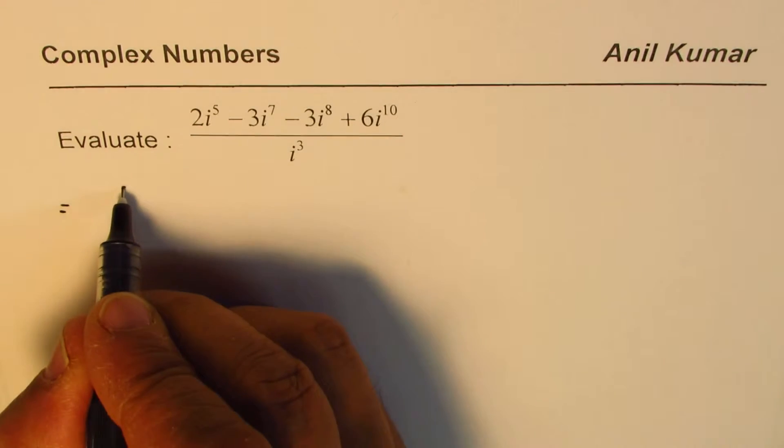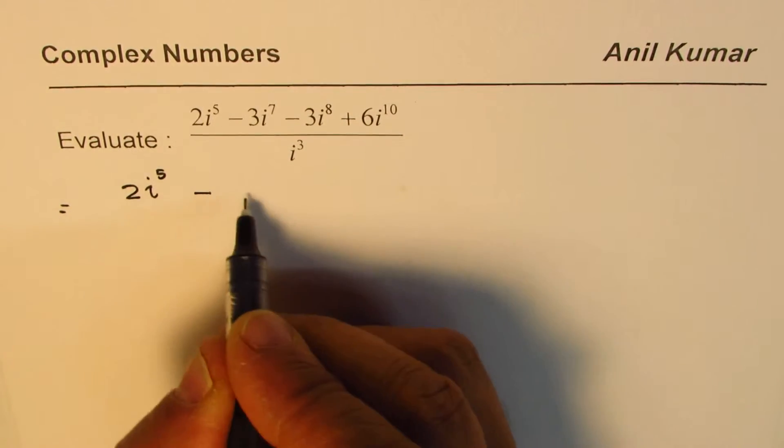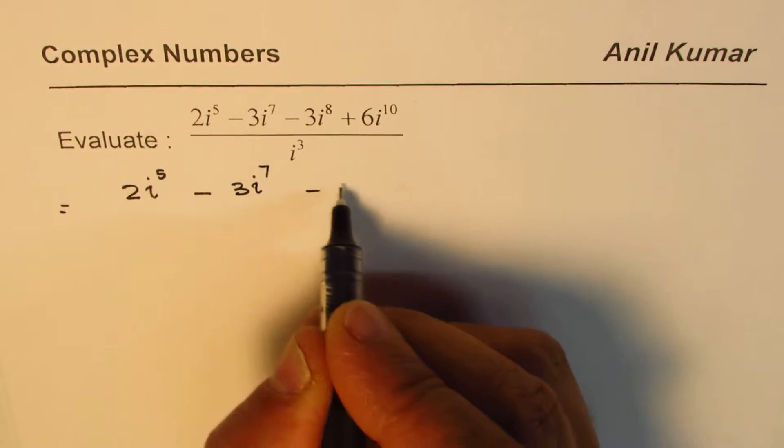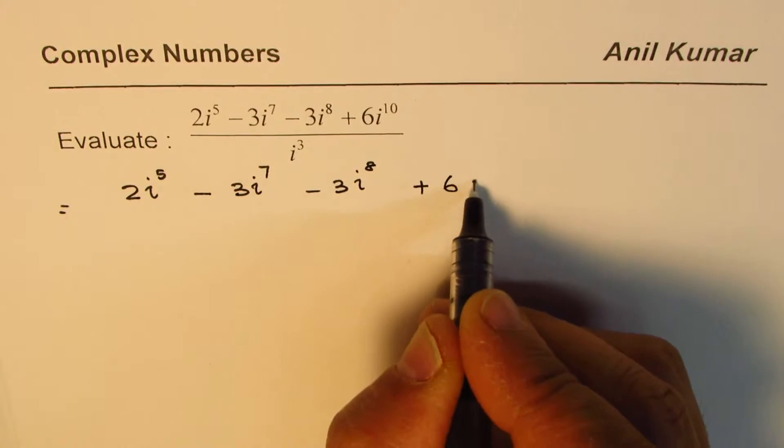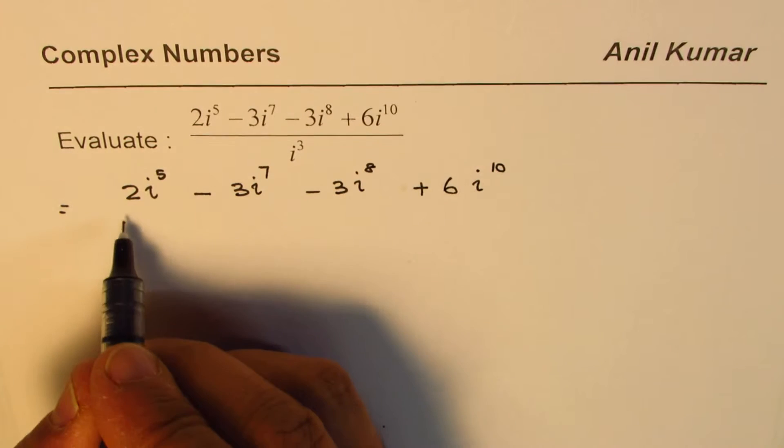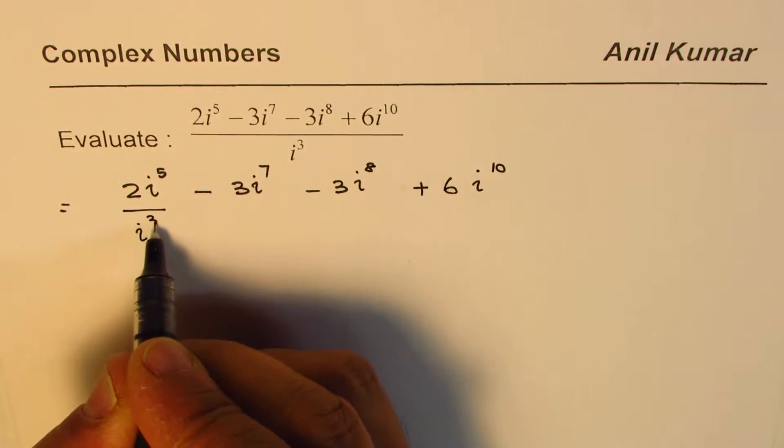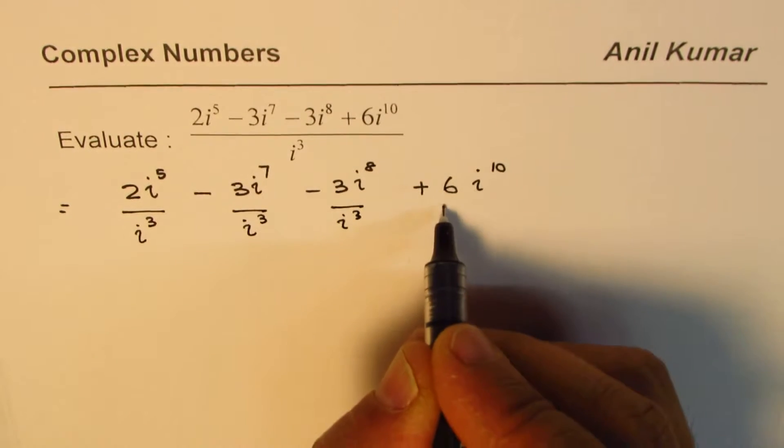Let me rewrite this expression. We have 2i^5 - 3i^7 - 3i^8 + 6i^10. Now everything is divided by i^3, so I could individually divide each by i^3. So these two expressions are equal, right?